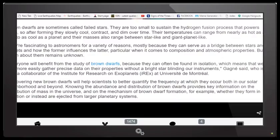New work from a team including Carnegie's Jonathan Gagney has discovered several ultra cool brown dwarfs in our own solar neighborhood. Their findings are published in the Astrophysical Journal. Very interesting. The article goes on to state that brown dwarfs are sometimes called failed stars. They are too small to sustain the hydrogen fusion process that powers stars. So after forming, they slowly cool, contract, and dim over time. Their temperatures can range from nearly as hot as a star to as cool as a planet, and their masses also range between star-like and giant planet-like.